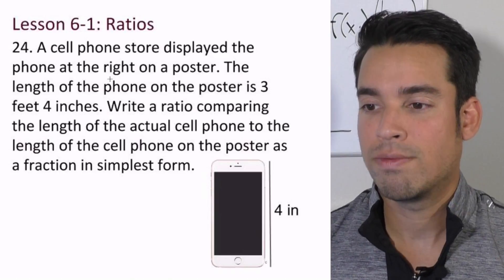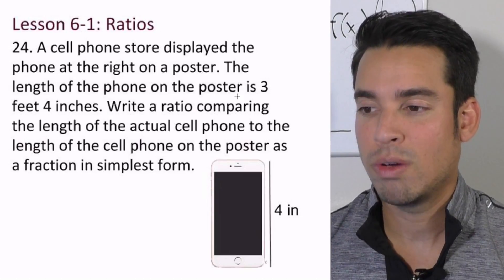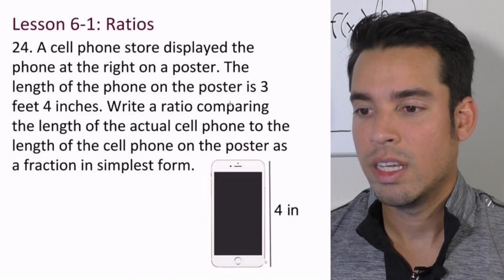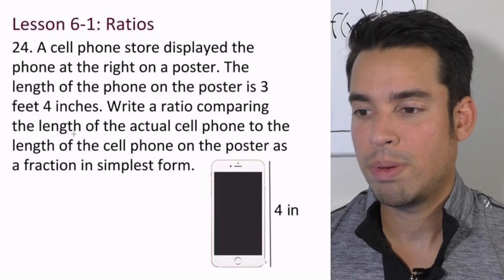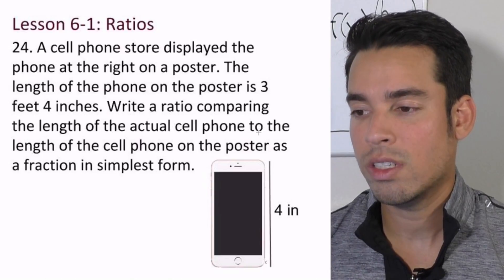Okay, let's go to number 24. A cell phone store displayed the phone at the right on a poster. The length of the phone on the poster is 3 feet 4 inches. Write a ratio comparing the length of the actual cell phone to the length of the cell phone on the poster as a fraction in simplest form.